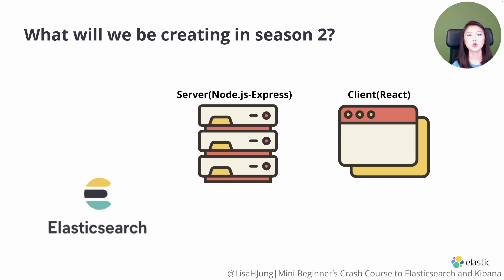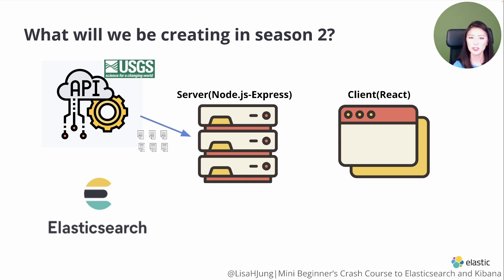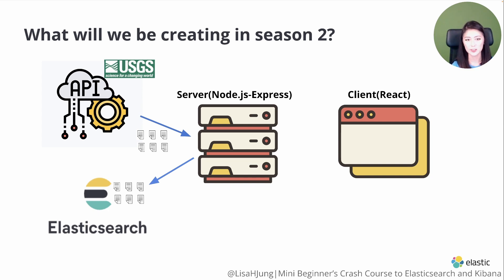We'll be ingesting global earthquake data into Elasticsearch, getting this data from the USGS API. We'll set up our server to fetch the data from this API. Upon fetching the data, the server will send the data to Elasticsearch, which will transform and ingest it into an index.